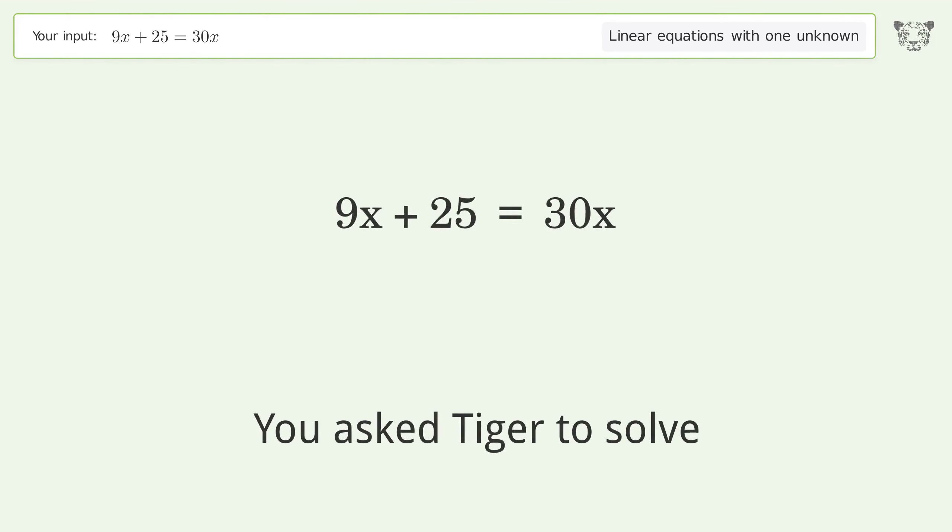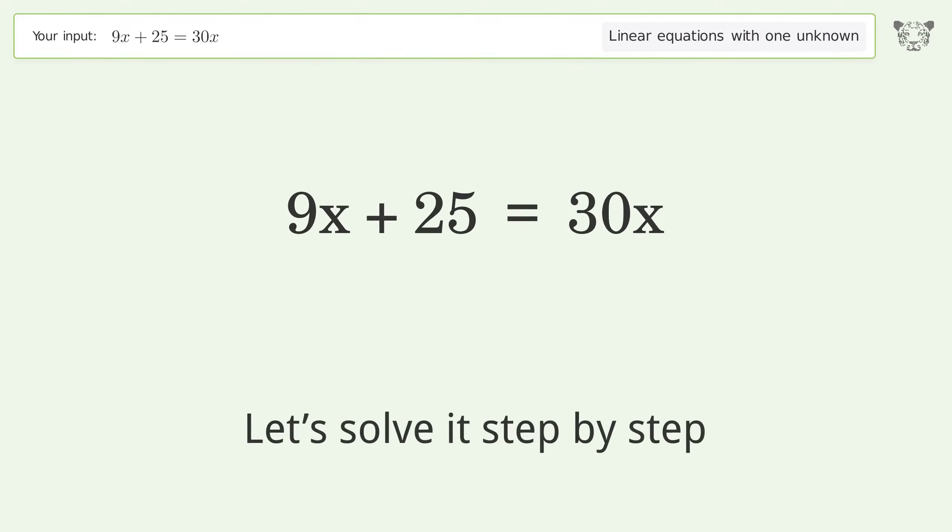You asked Tiger to solve. This deals with linear equations with one unknown. The final result is x equals 25 over 21. Let's solve it step by step.